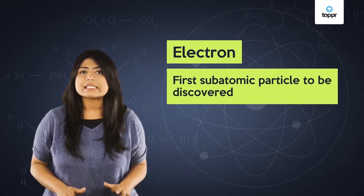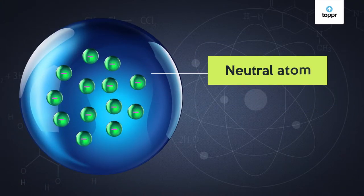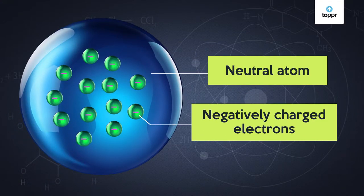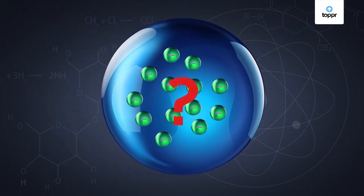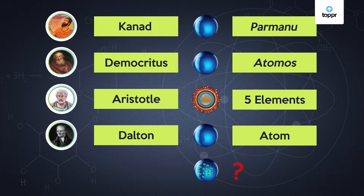But this raised a question: Why is the atom neutral if it contains negatively charged electrons? Also, where are the electrons placed in the atom? So many theories and discoveries but we still do not have a clear picture of the atom. I am sure this must be boggling your mind too.